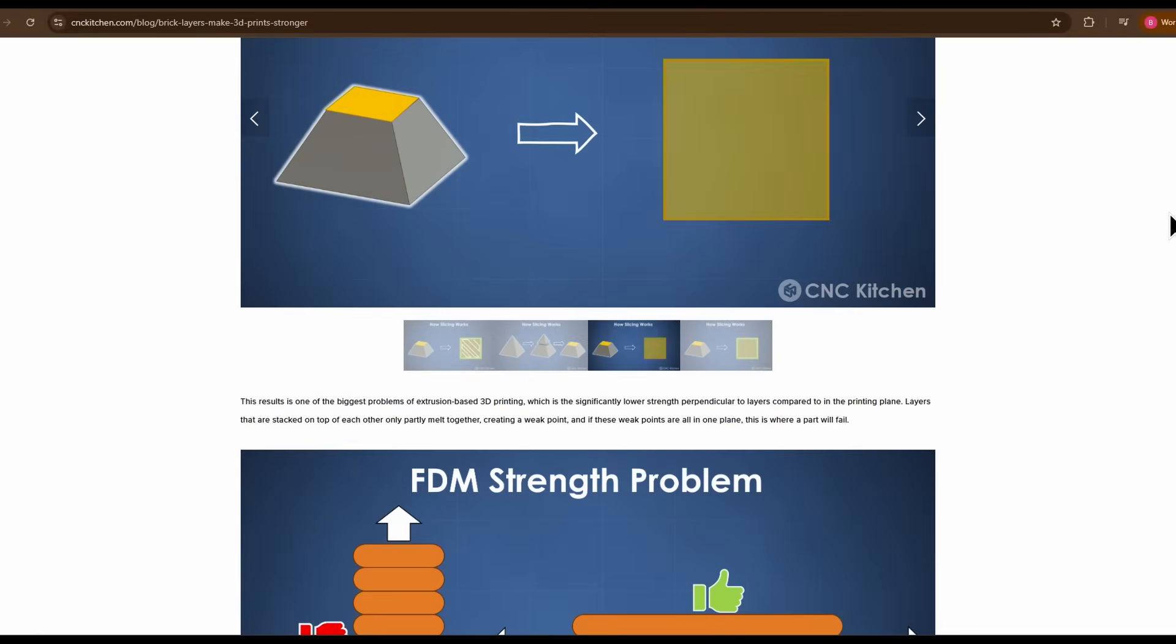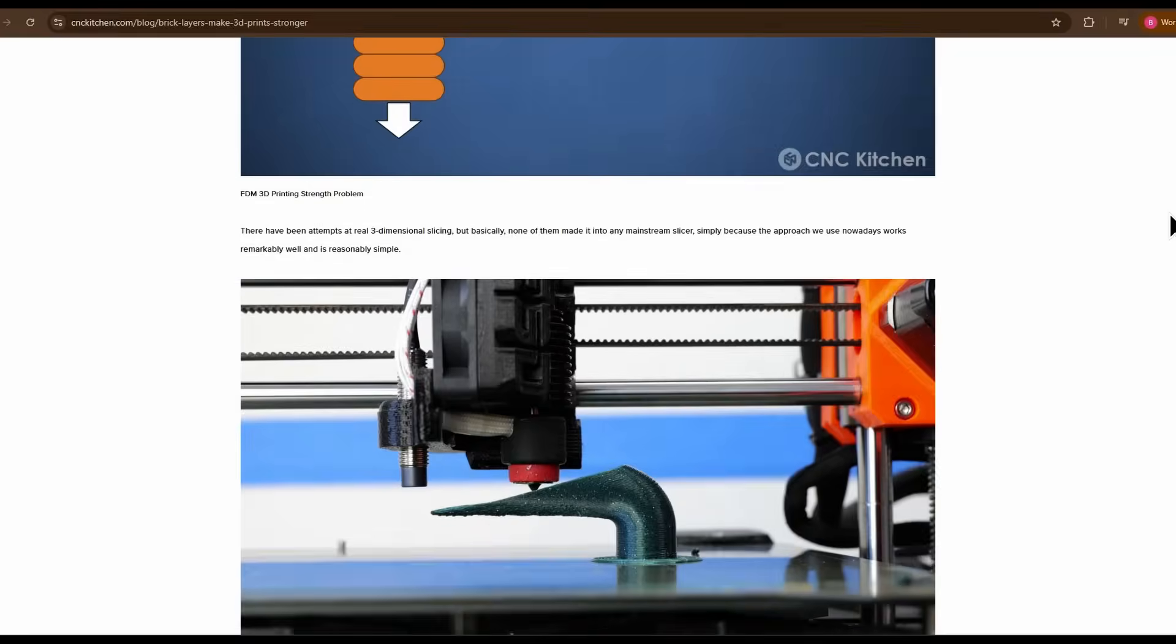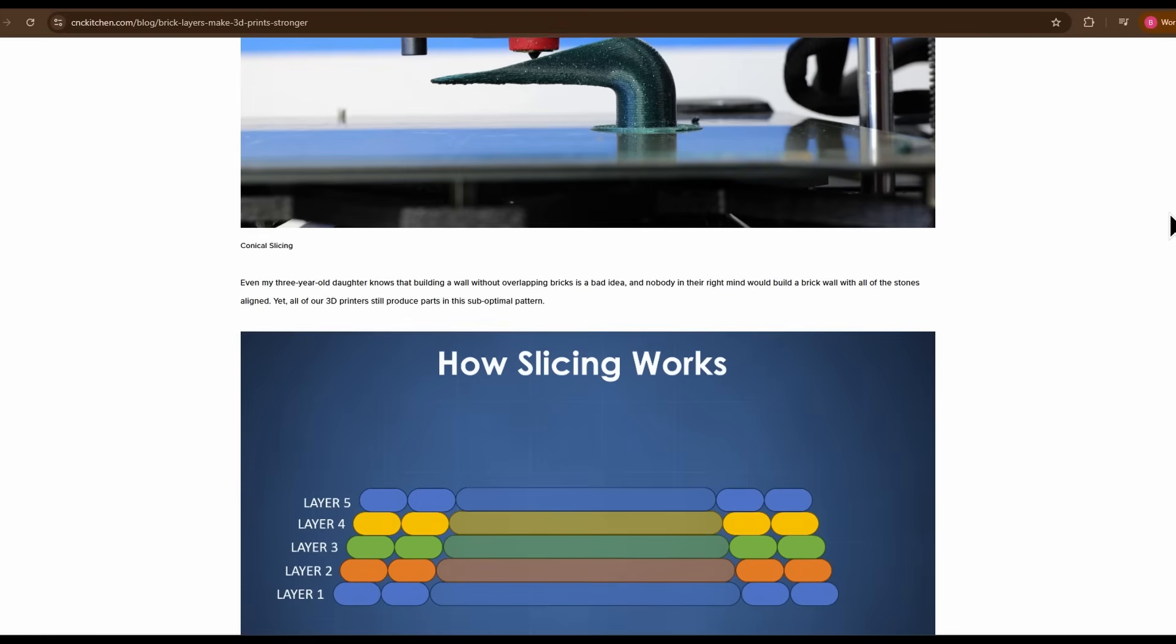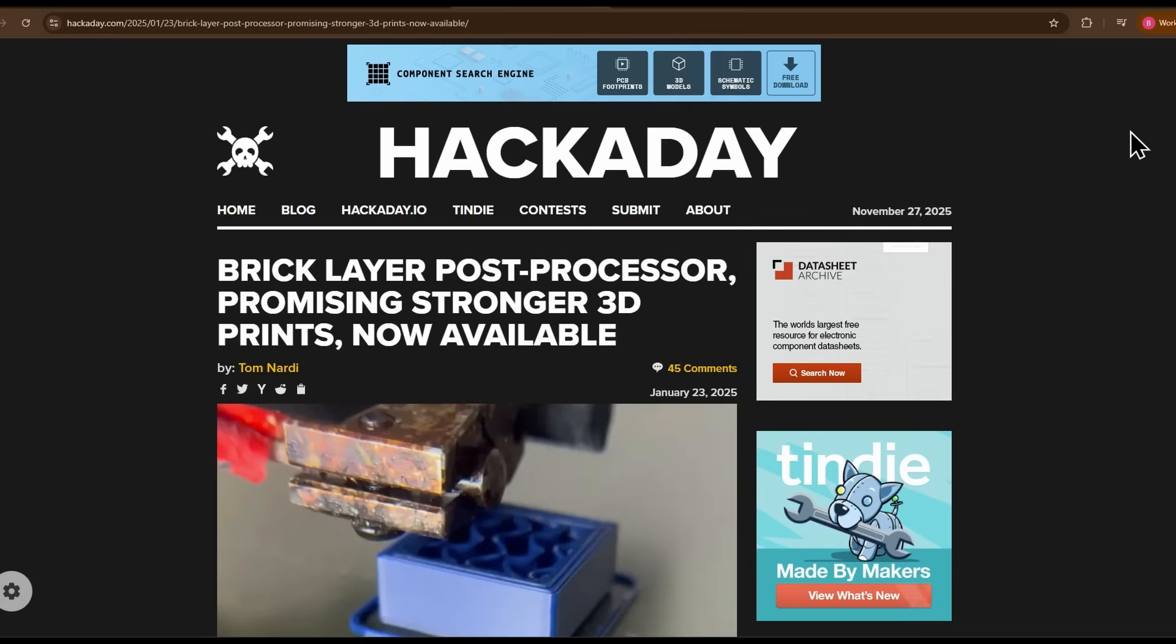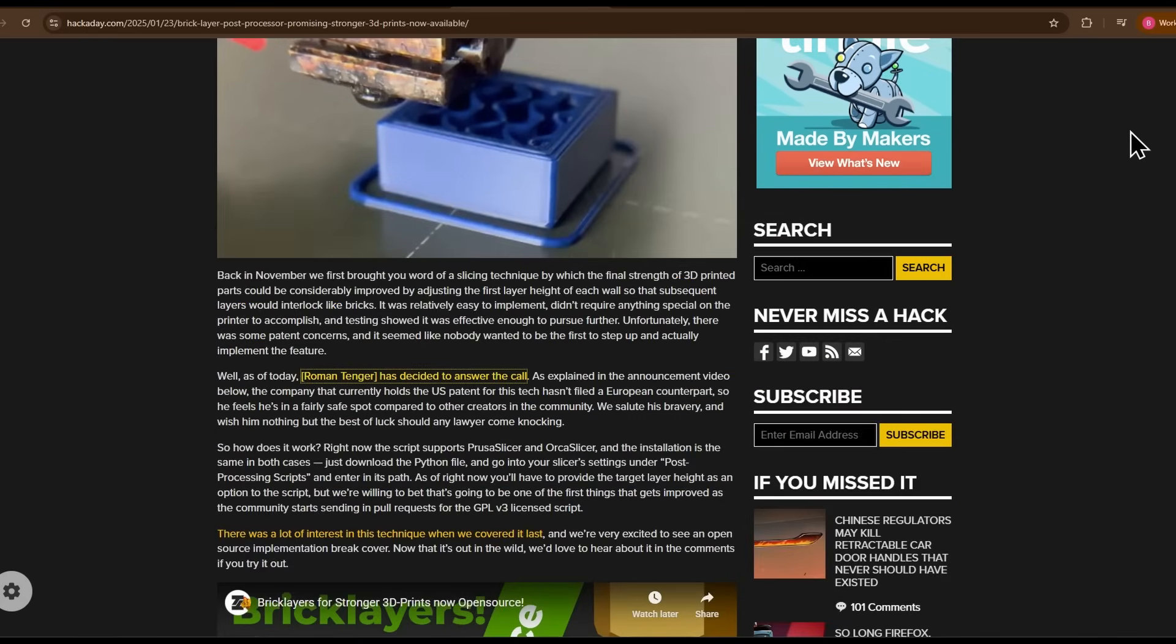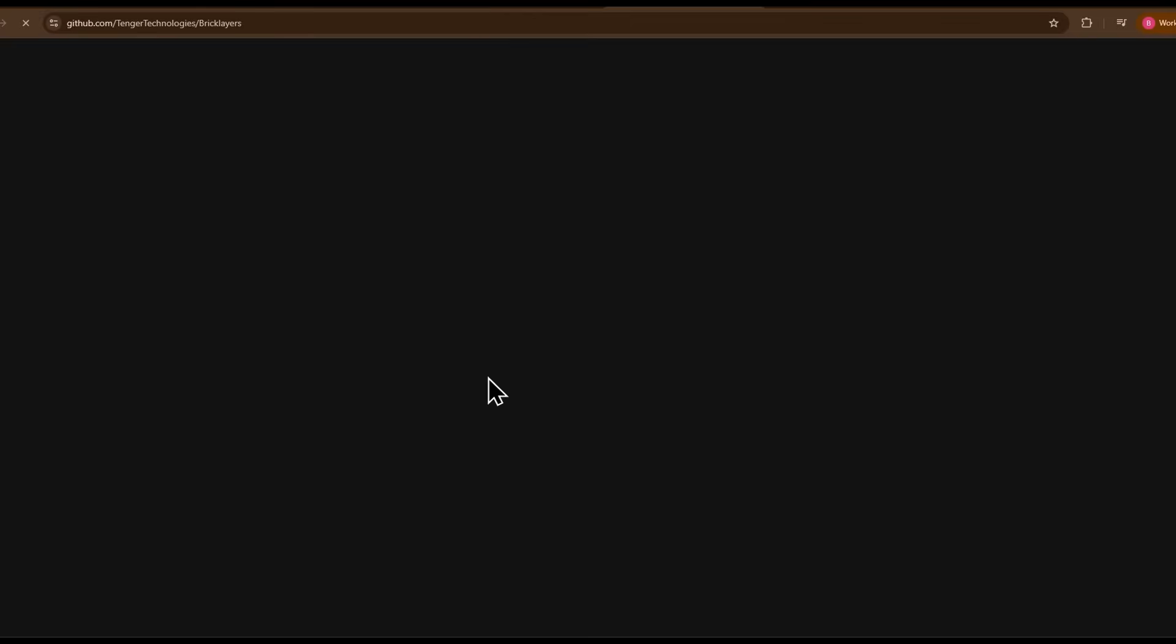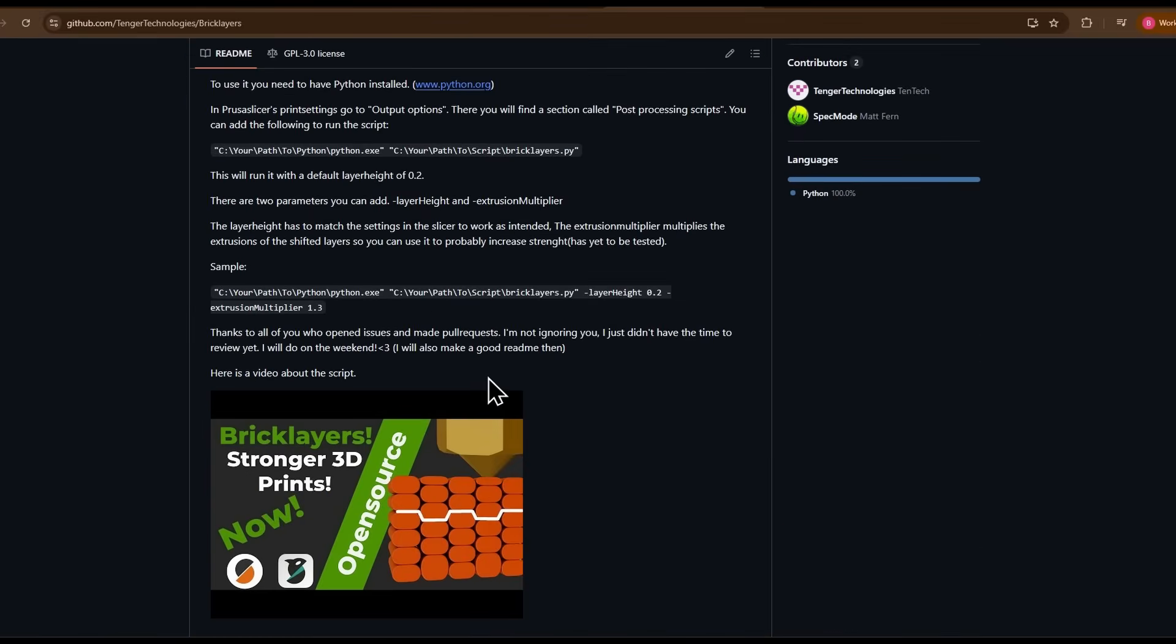Brick layers, or staggered perimeters, started to gain some traction about 18 months ago, when the community started releasing G-code post-processes where you could run a post-processing script on the standard slicer-generated G-code to modify it before sending it to the printer. For the hardcore 3D printing community, this was more than enough to start to get this technique out there.